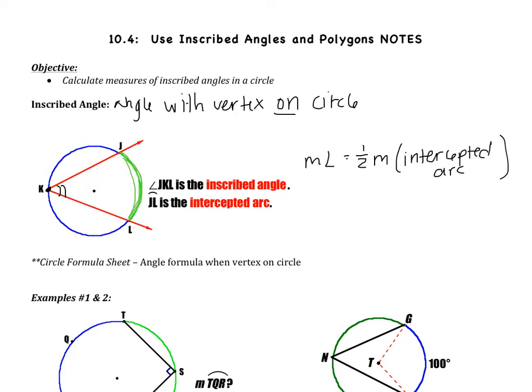So in this case, if arc JL was 100 degrees, the angle would be 50 degrees. The angle is half of the arc. You're going to need a circle formula sheet — we will fill it out in class, so don't worry about that.